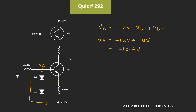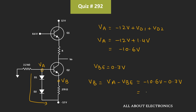Similarly, let's say the voltage at this node is equal to Vb. Since we have been given that Vbe is equal to 0.7V, we can say that Vb is equal to Va minus Vbe. That is equal to minus 10.6V minus 0.7V, which is equal to minus 11.3V. That means the voltage at this node is equal to minus 11.3V.